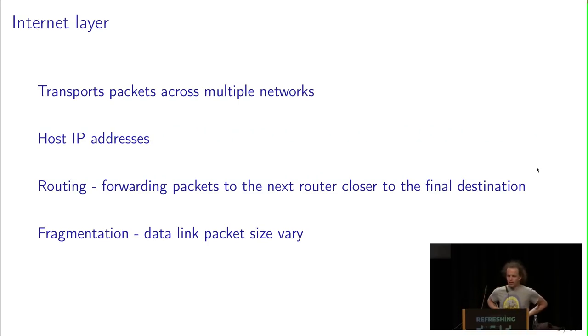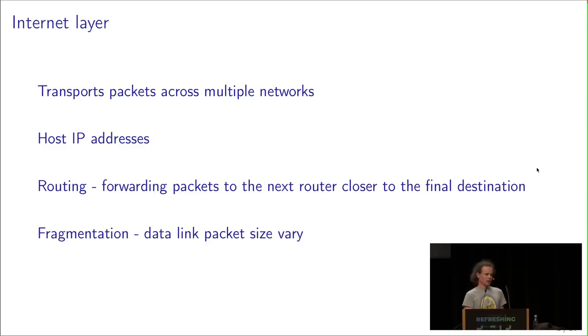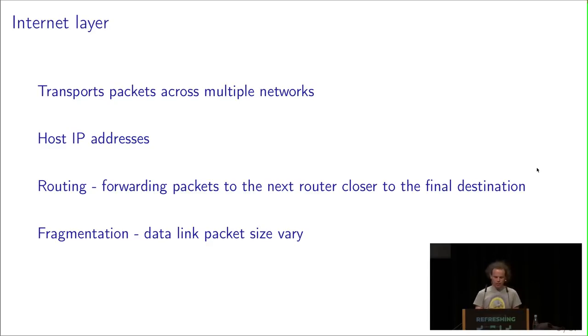The next layer is the internet layer, whose task is to transport packets across multiple networks. Router A and router B are both connected to several data link layers and use the internet layer to transport packets across them. The internet layer solves addressing by providing every host an IP address — internet protocol address. It also handles routing, forwarding packets to the next router closer to the final destination. The internet layer also supports fragmentation: if a higher layer sends something too big for the data link layer, the internet layer can fragment it, and the other side reassembles it.